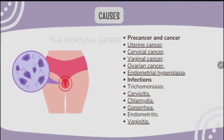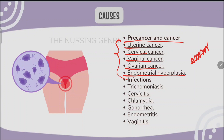Pre-cancerous conditions and cancers are also causes of abnormal uterine bleeding. In the female reproductive system, cancers such as uterine cancer, cervical cancer, vaginal cancer, ovarian cancer, and endometrial hyperplasia — where the endometrial lining grows abnormally — can all lead to AUB.